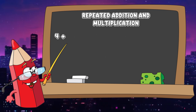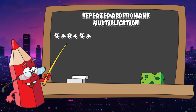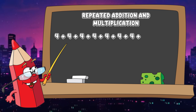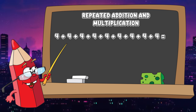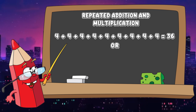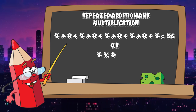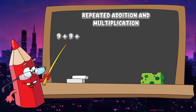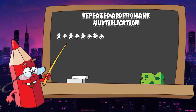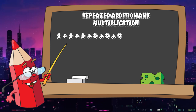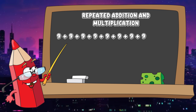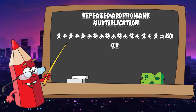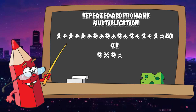4 plus 4 plus 4 plus 4 plus 4 plus 4 plus 4 plus 4 plus 4 is equals to 36, or in multiplication, 4 times 9 is equals to 36. 9 plus 9 plus 9 plus 9 plus 9 plus 9 plus 9 plus 9 plus 9 is equals to 81, or in multiplication, 9 times 9 is equals to 81.